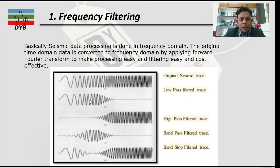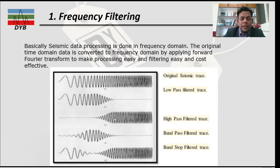After applying the low pass filter, you can see only the low frequencies remain, while the higher frequencies are removed. Similarly, if you want the higher frequencies — especially when looking for thin beds in the subsurface — you apply the high pass filter. The high pass filter only passes high frequencies, so in the resulting trace the low frequency data has been removed and the high frequency data remains in the dataset.